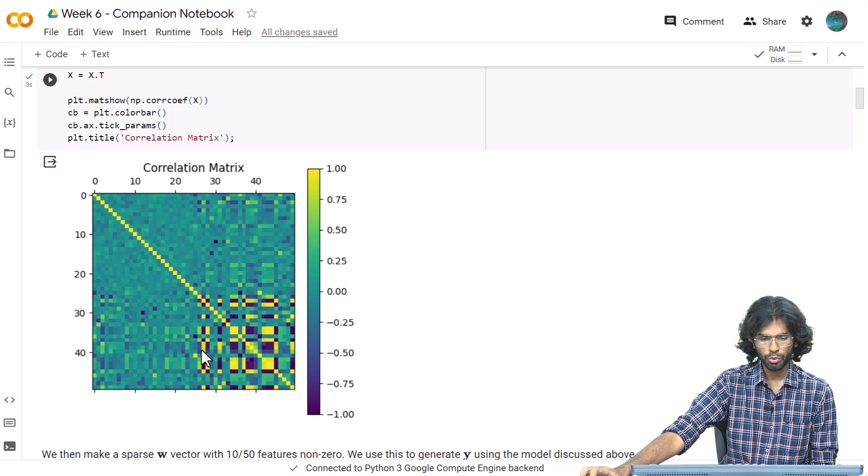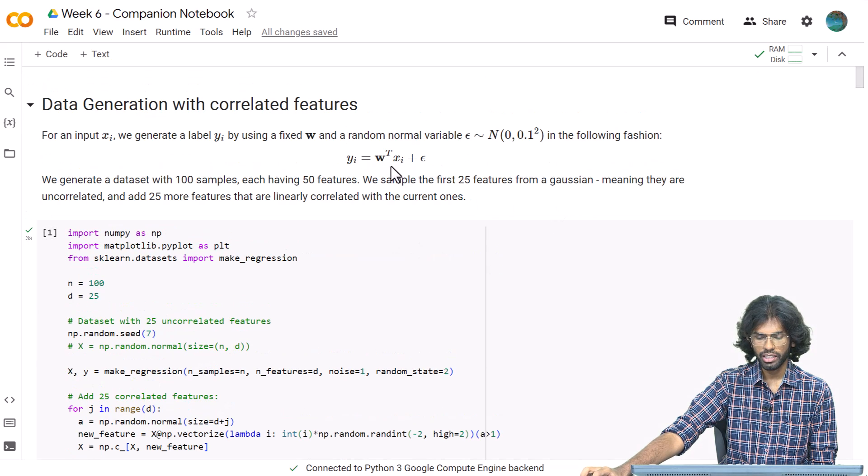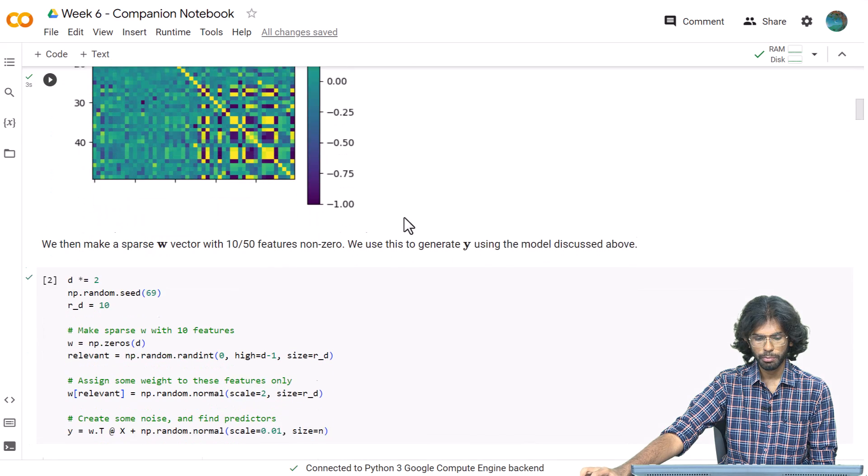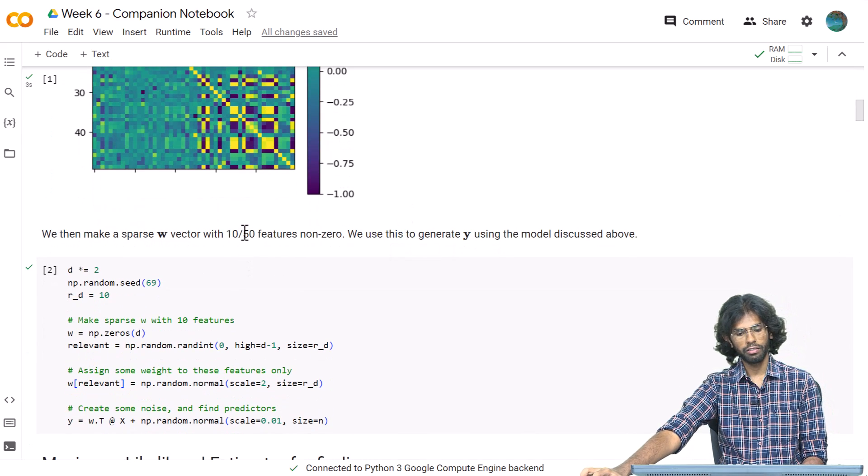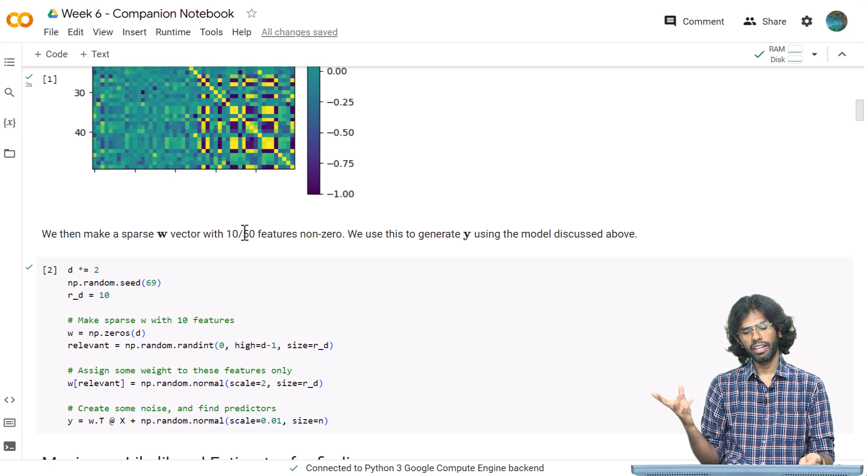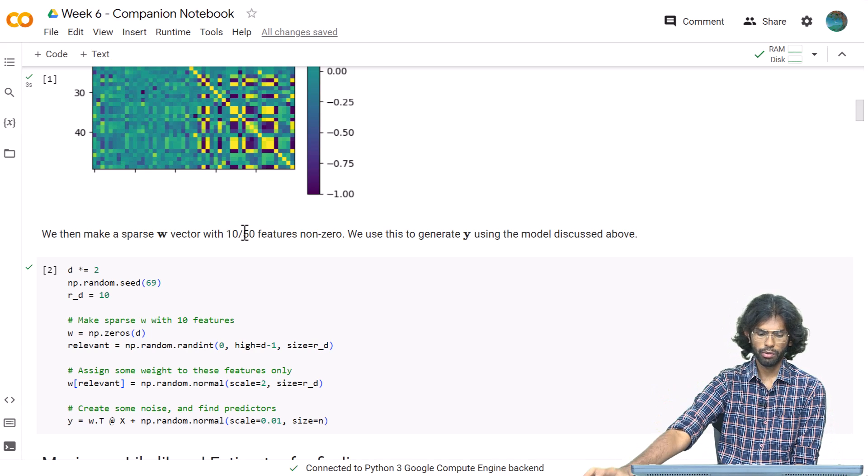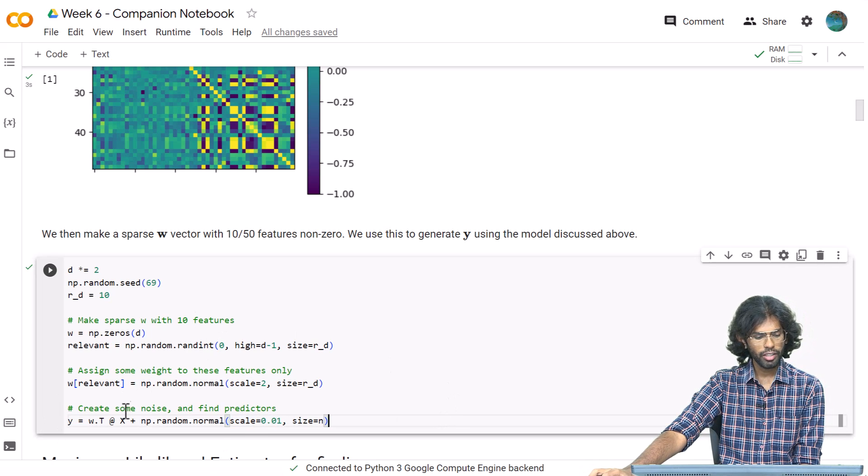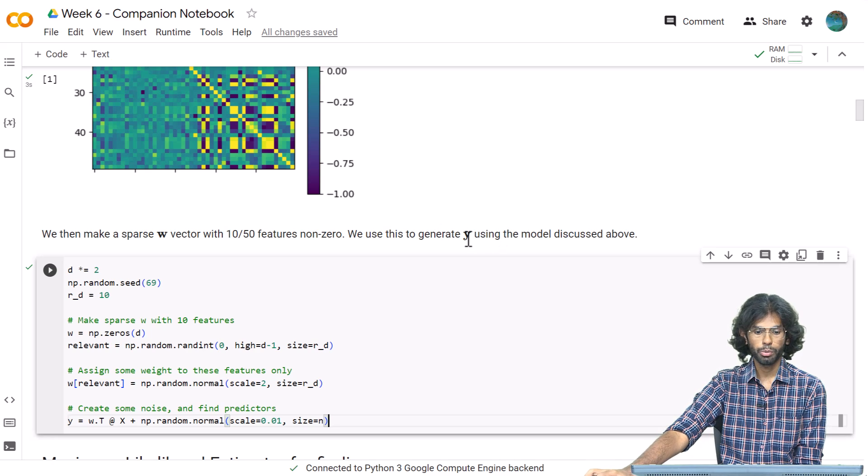To generate our labels, we have our dataset, and we also need w and noise. We will create w to be a sparse vector with 10 out of the 50 features being non-zero. And then our error vector with variance 0.1—this is 0.01 because this scale corresponds to the standard deviation. We have created our labels y.